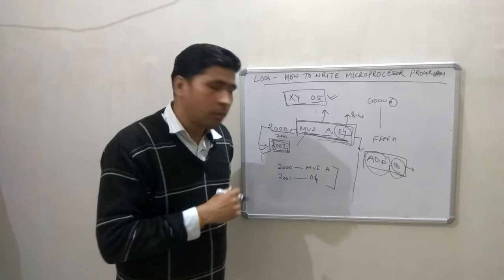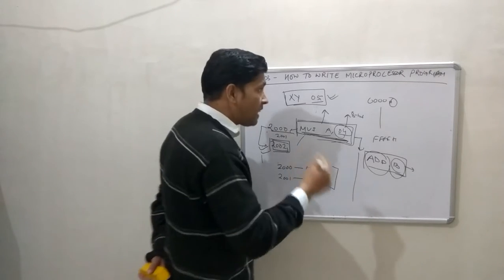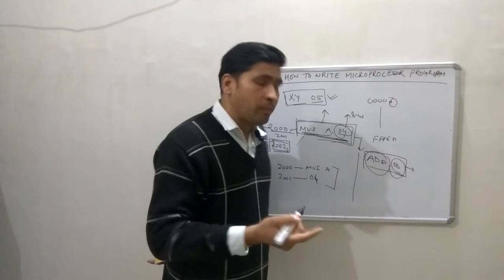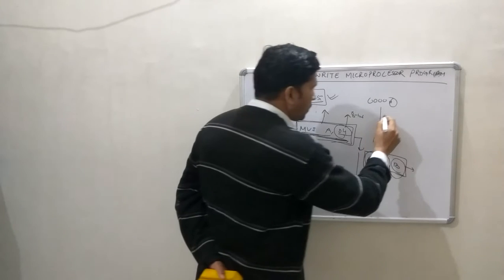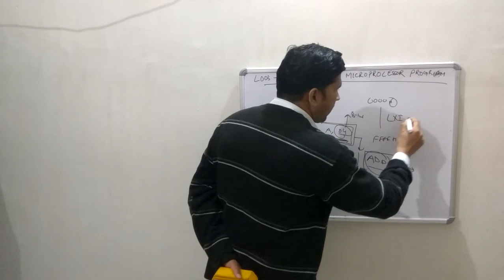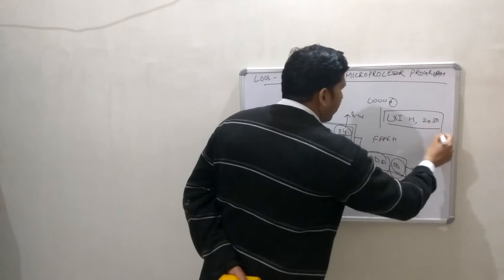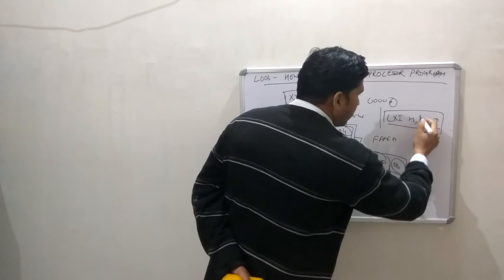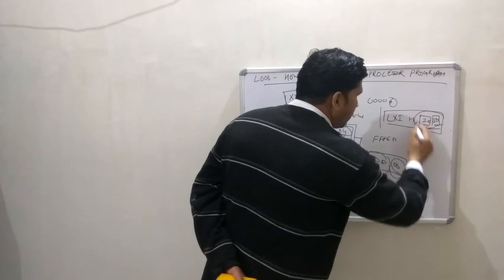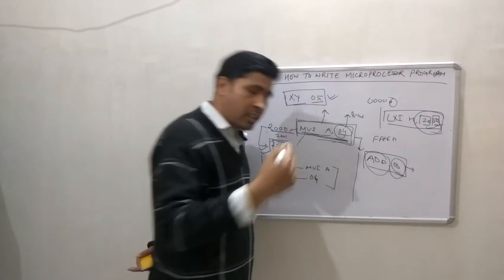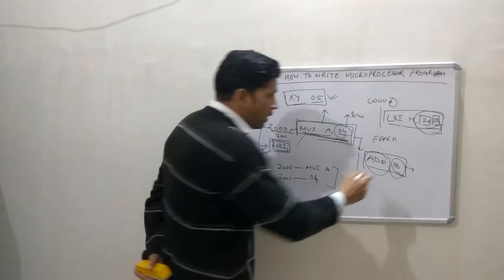In the background, at address 2000 MVI A is stored and at 2001 the data 04 is stored. In the case of a three-byte instruction, if any instruction has 16-bit data, that instruction will be a three-byte instruction requiring three memory addresses. For example, if you see an instruction with 16-bit data — that is 8 bits plus 8 bits — that type of instruction is called a three-byte instruction.